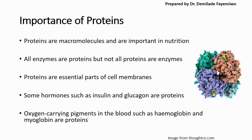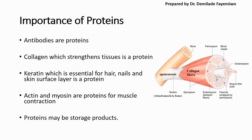You also have oxygen-carrying pigments in the blood such as hemoglobin and myoglobin, which are proteins. In this video I will discuss hemoglobin but we do not get into detailed myoglobin. Antibodies in our bodies are also proteins — they form part of our immune system, so when we fall ill we produce antibodies to fight the causative agent of the illness. This is covered at AS level in chapter 11 on immunity.